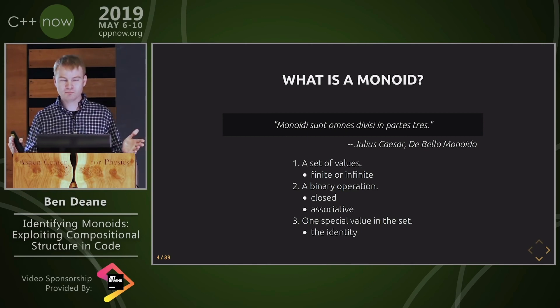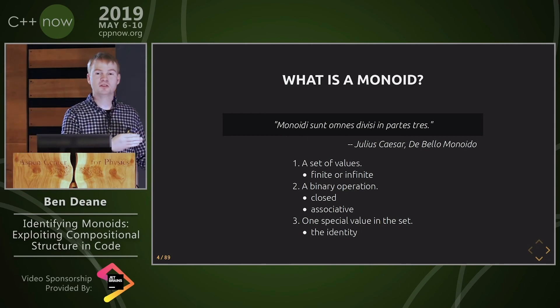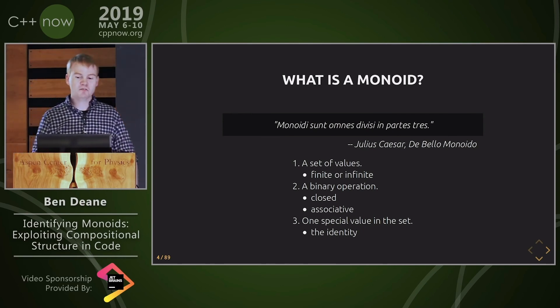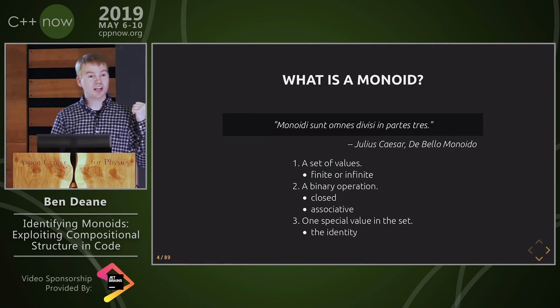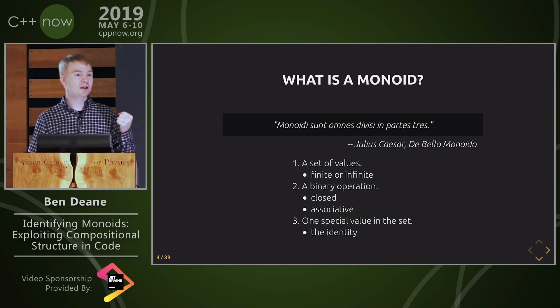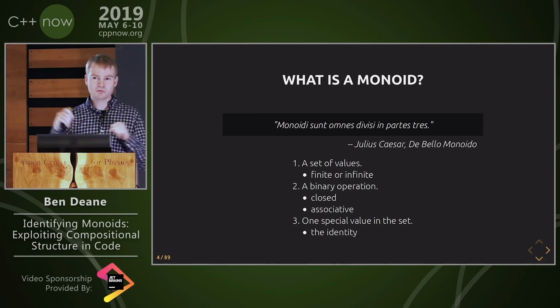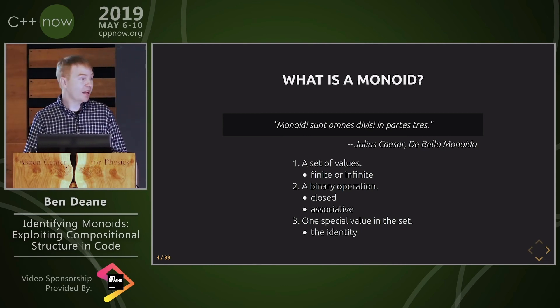A monoid is basically three things. You've got a set of values, and that set in computer science usually is finite, but there might be a finite approximation to a conceptually infinite set in mathematics. You've got a binary operation, which is closed over the set, so when you put two elements in, you get the thing of the same type out, and that operation has to be associative. Notably, it doesn't have to be commutative. That's kind of an optional add-on. And there's one special value in the set, which is the identity.